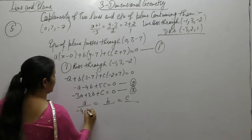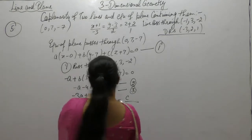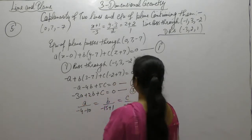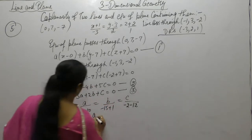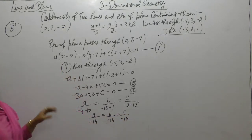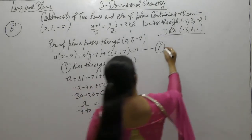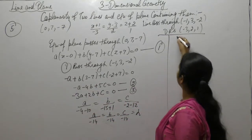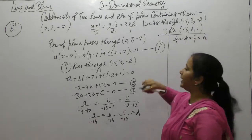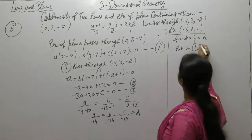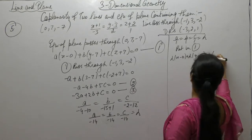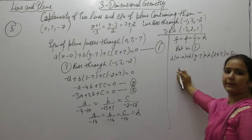Using cross-multiplication: 1 into minus 4 minus 10, b is 5 into minus 3 minus plus 1, minus 2, with appropriate signs. We get a upon minus 14, b upon minus 14, and c upon minus 14. So we get the value — letting it equal lambda: a upon 1, b upon 1, c upon 1 equals lambda. Putting this value back into equation 1.